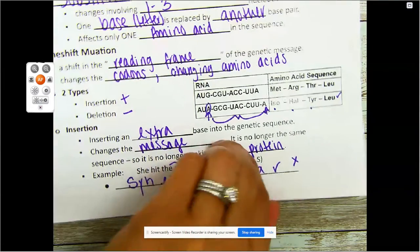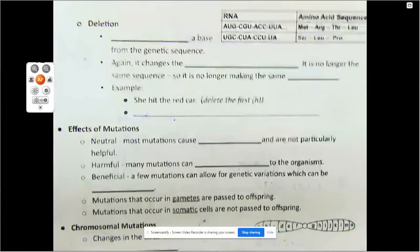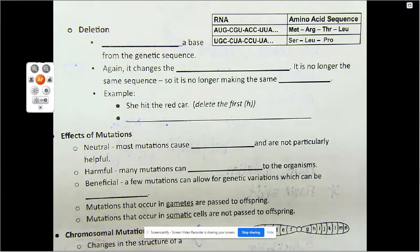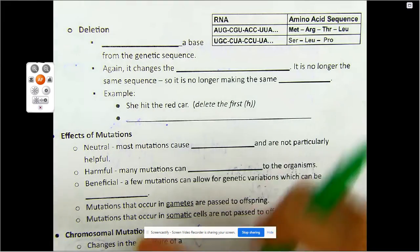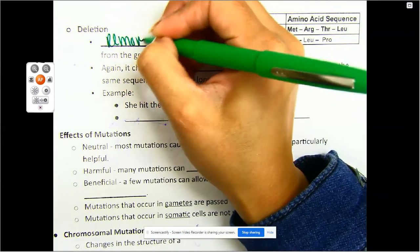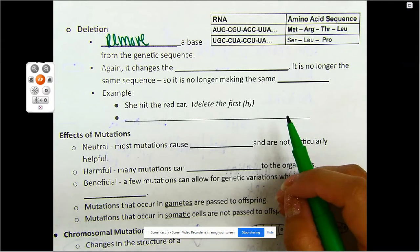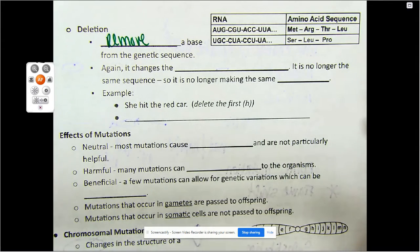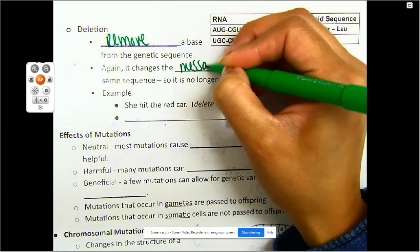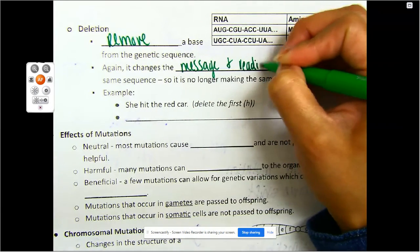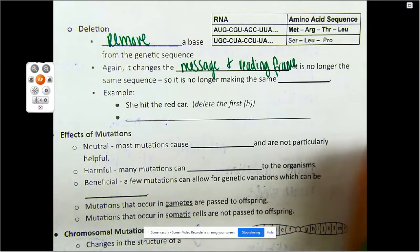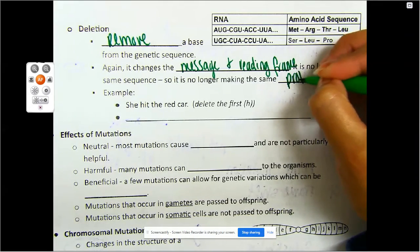Frame shift mutations are going to be the most serious. Let's go ahead and look at deletion. I'm going to remove a base from the genetic sequence. Again, you're going to change your reading frame and it's going to change your message completely. It is no longer the same sequence, so it is no longer making the same protein.